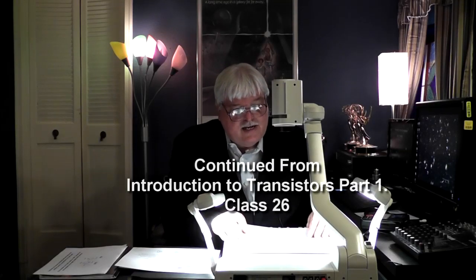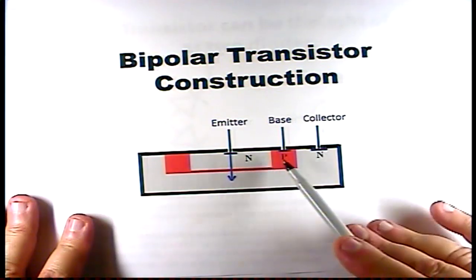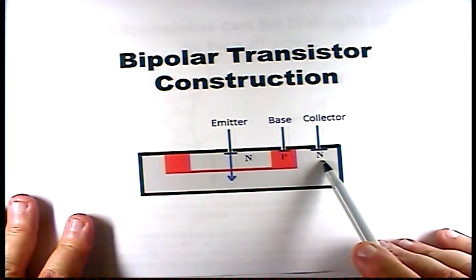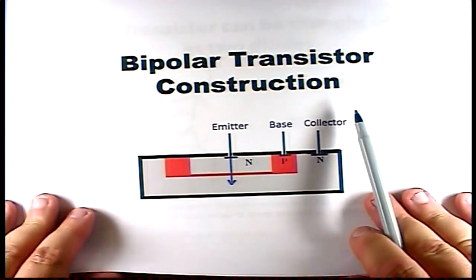That is a picture of the very first transistor Walter Bratton built. We're going over the construction of the bipolar transistor again. Here we have an emitter, we have an N region doped, a P region doped, and an N region doped, making the three connections.